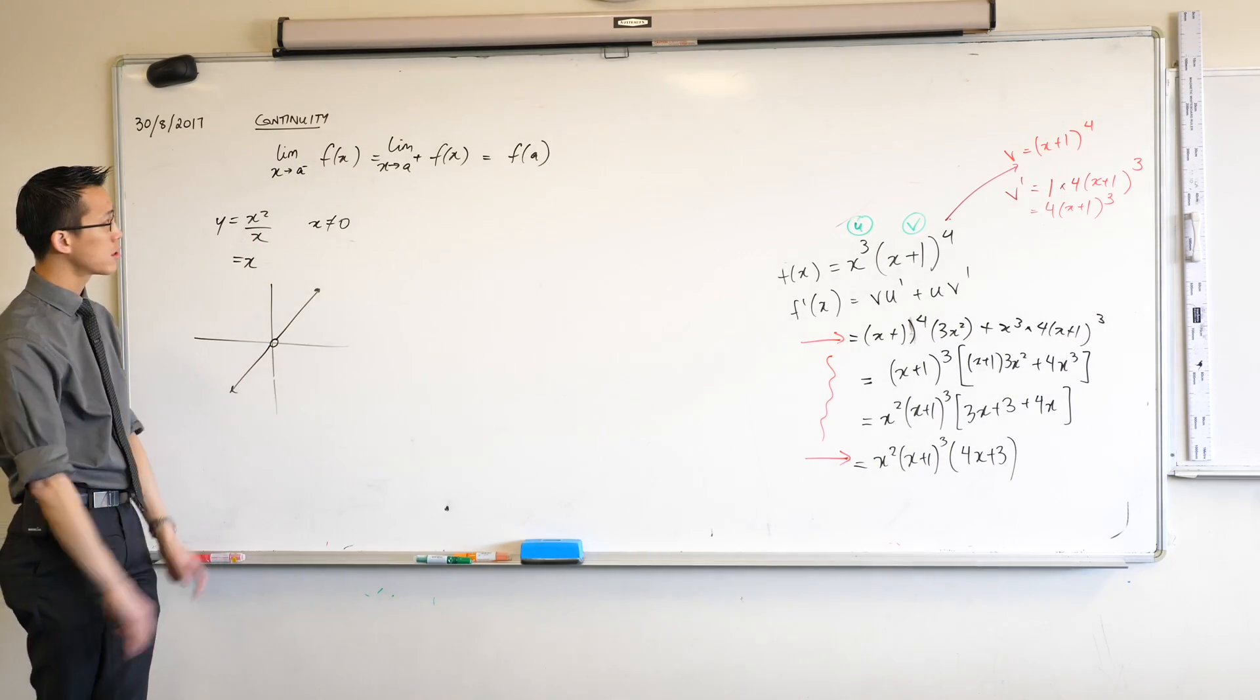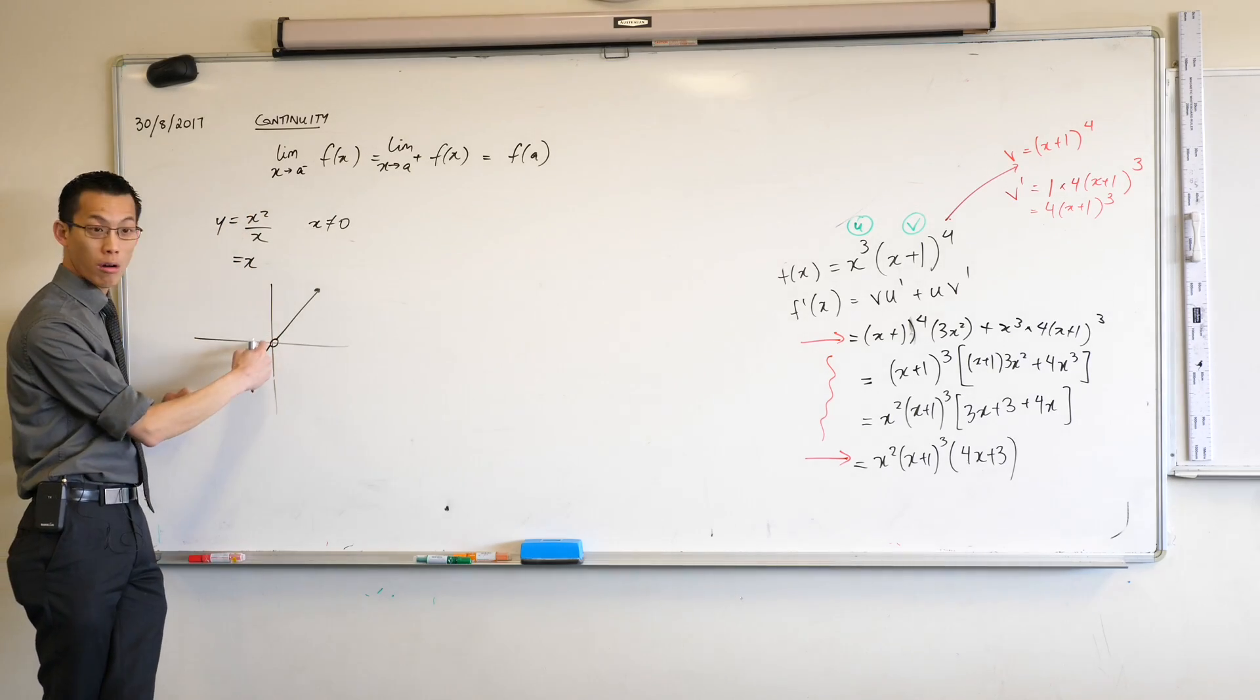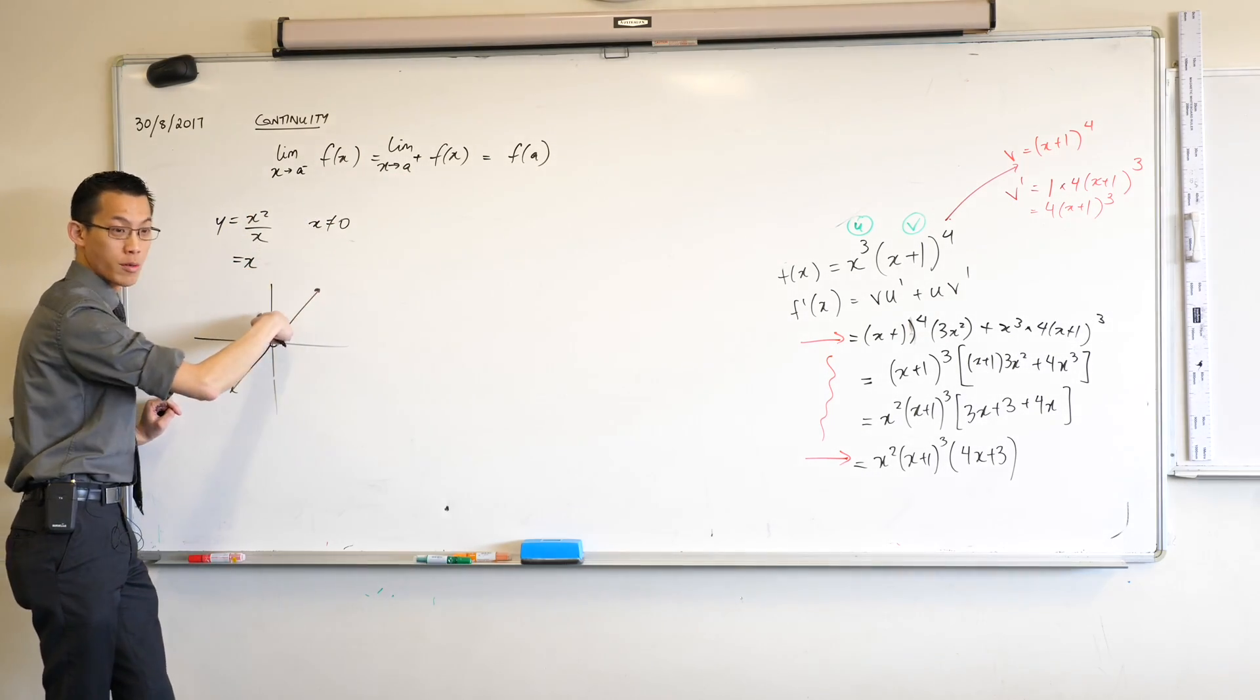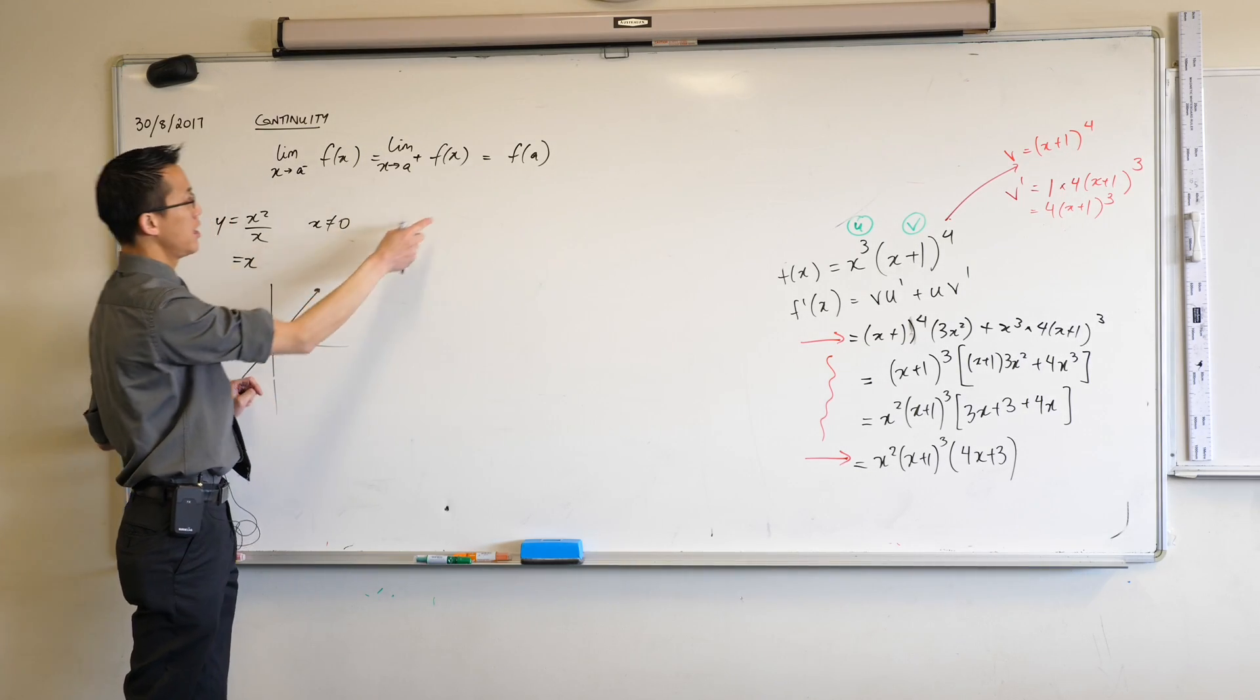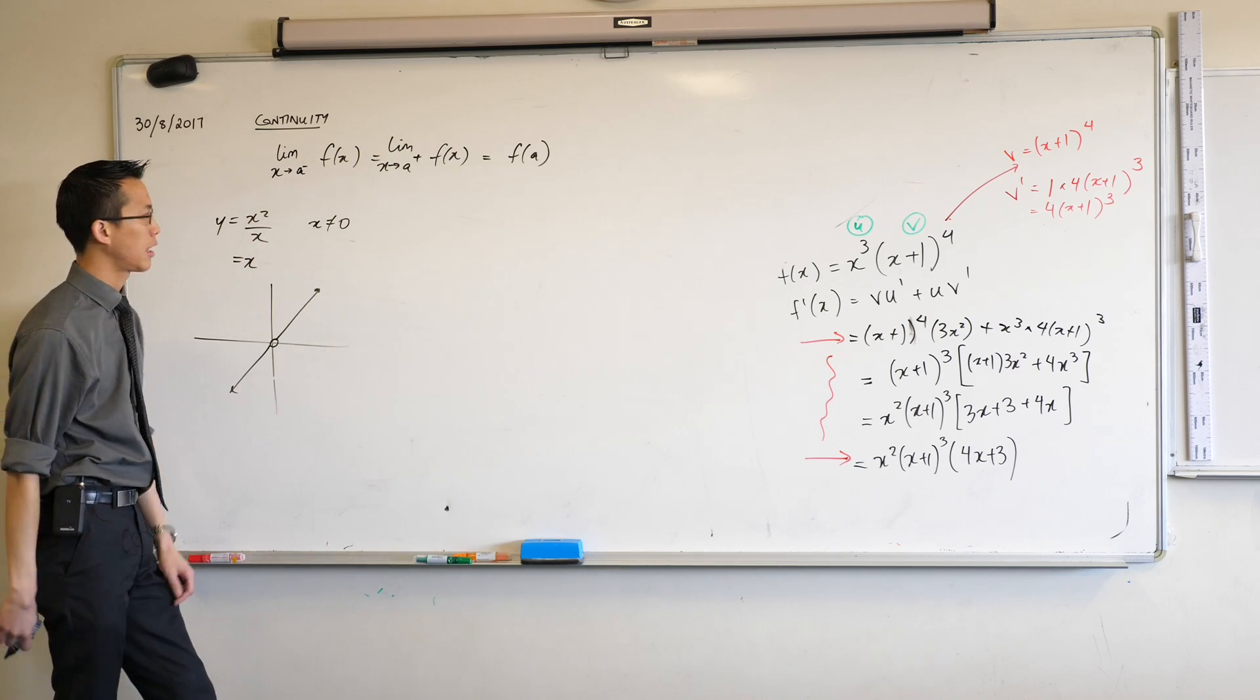So this is not continuous because even though when you come from the left, say the origin, you go towards zero. When you come from the right you go towards zero but right at that actual spot it breaks down, right? So this is equal to this but it doesn't equal to this because it doesn't even exist, okay?